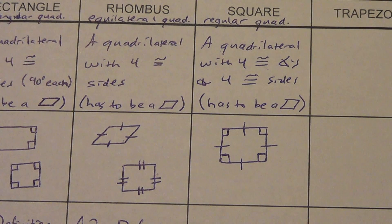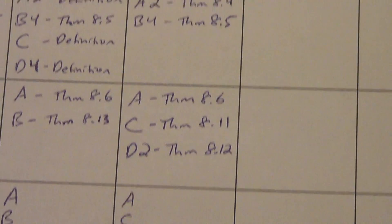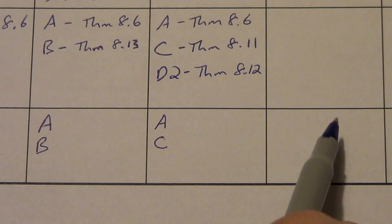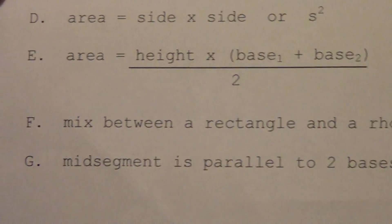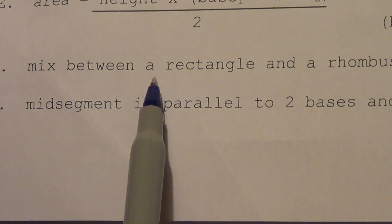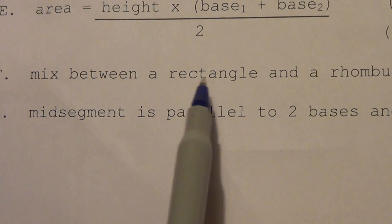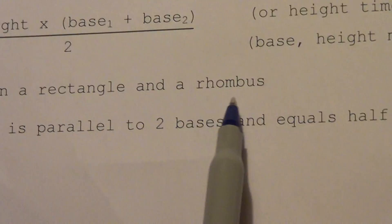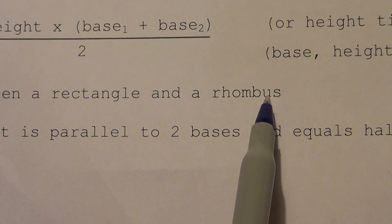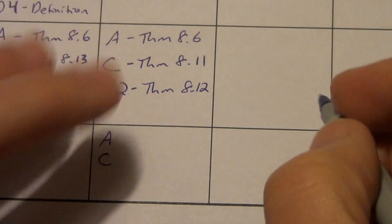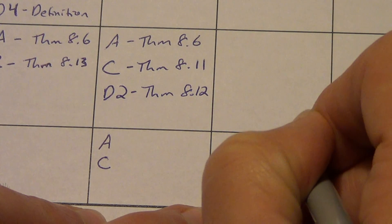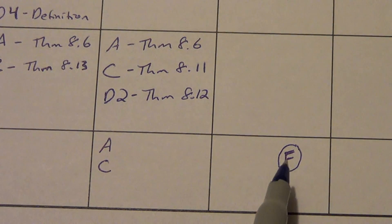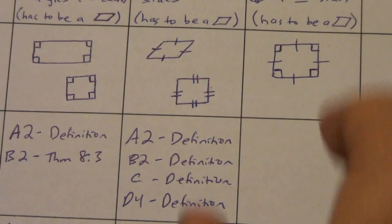Alright, now I'm going to skip sides and angles and diagonals and go all the way down to the 'other' box, because the most important thing is right here. A mix between a rectangle and a rhombus. A square gets the four right angles from the rectangle, and it gets the four congruent sides from the rhombus. It kind of merges them together. Letter F right here — I'm going to circle it — is the absolutely most important letter in this whole section for squares.